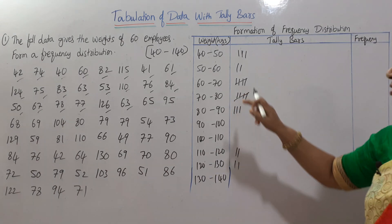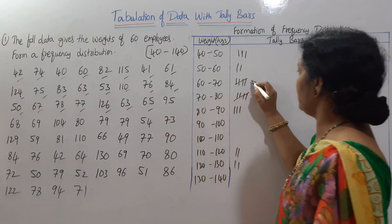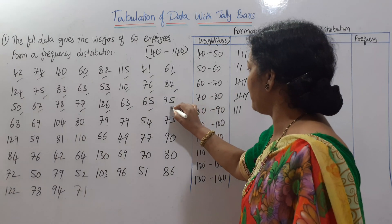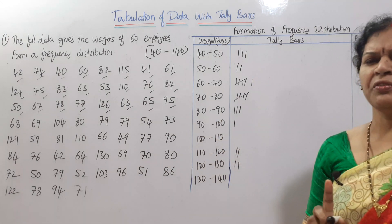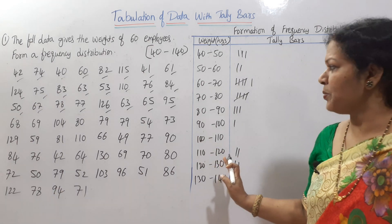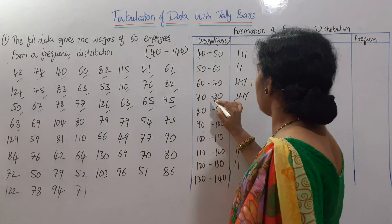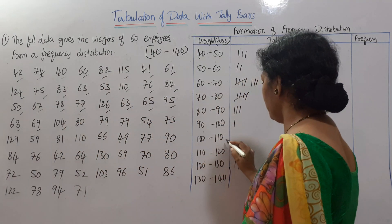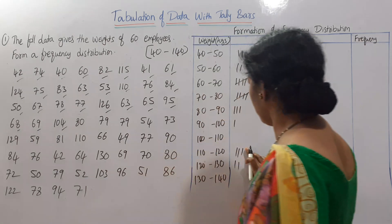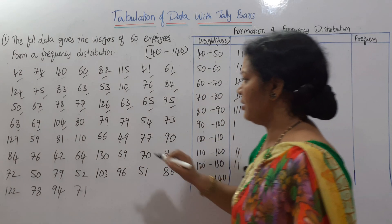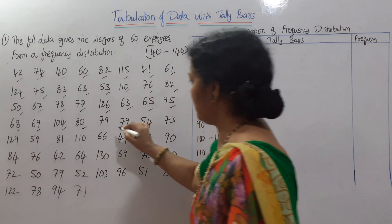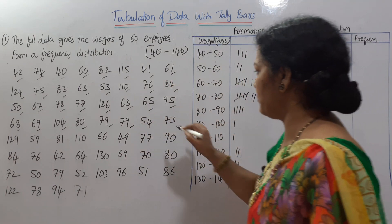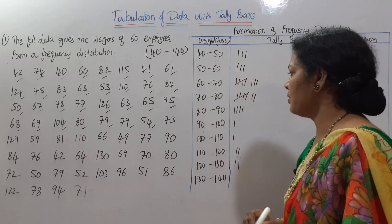Next: 126 in 120–130; 63 in 60–70 — crossing the 5th bar again; 65 in 60–70 — 5 are over, starting fresh tally bars; 95 in 90–100. Marking each number one by one and transferring it into the correct class. Next: 68 in 60–70; 69 in 60–70; 80 in 80–90; 79 in 70–80. Again 79 in 70–80. Then 54 in 50–60; 73 in 70–80.